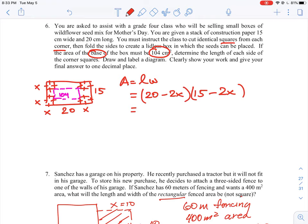So 20 times 15 is 300 minus 40x, 20 times negative 2, minus 30x, 2 times 15, plus 4x squared.